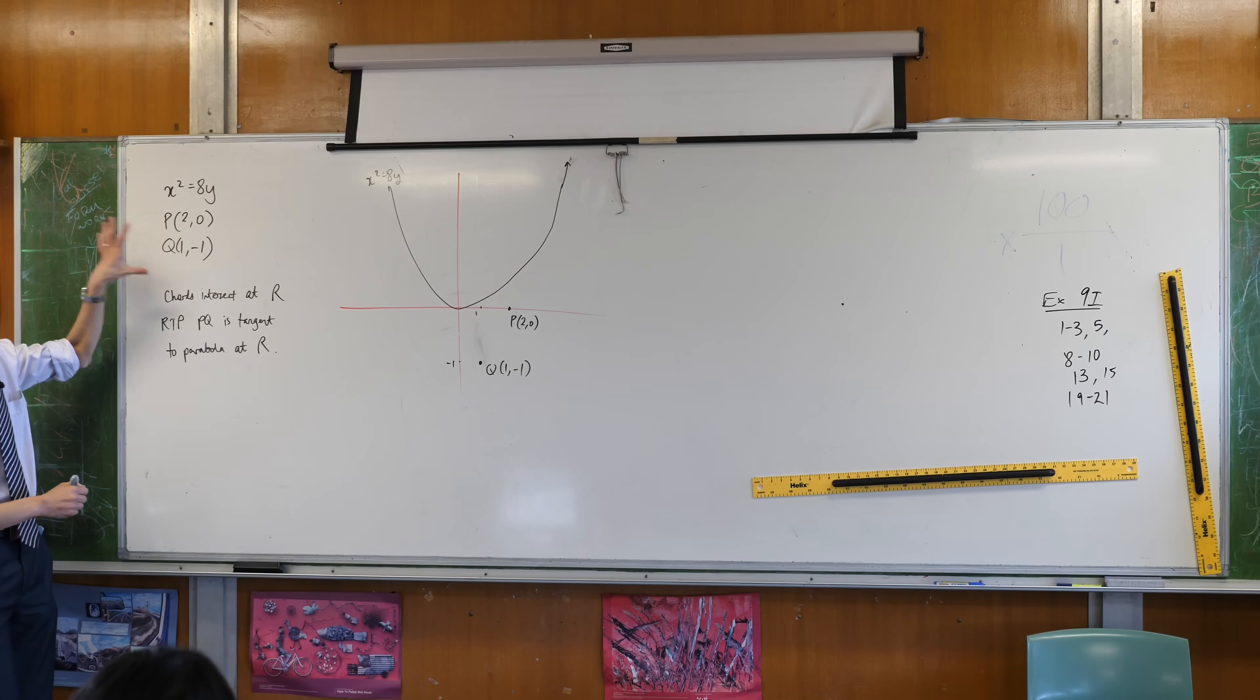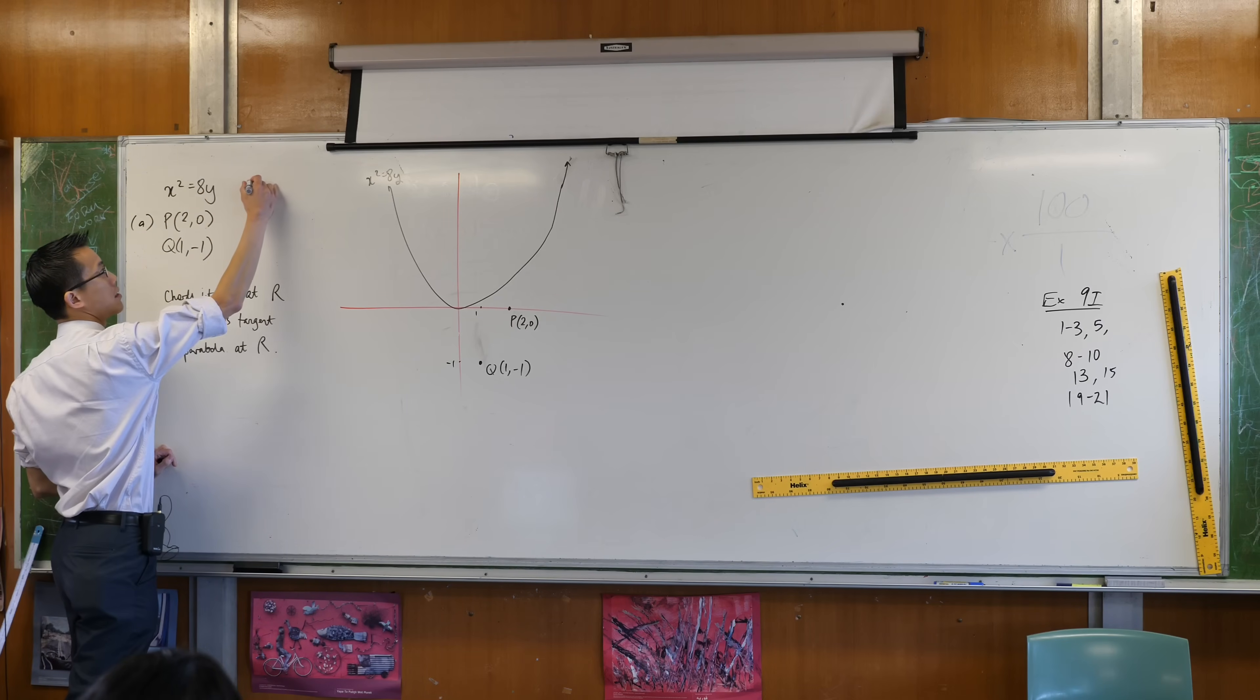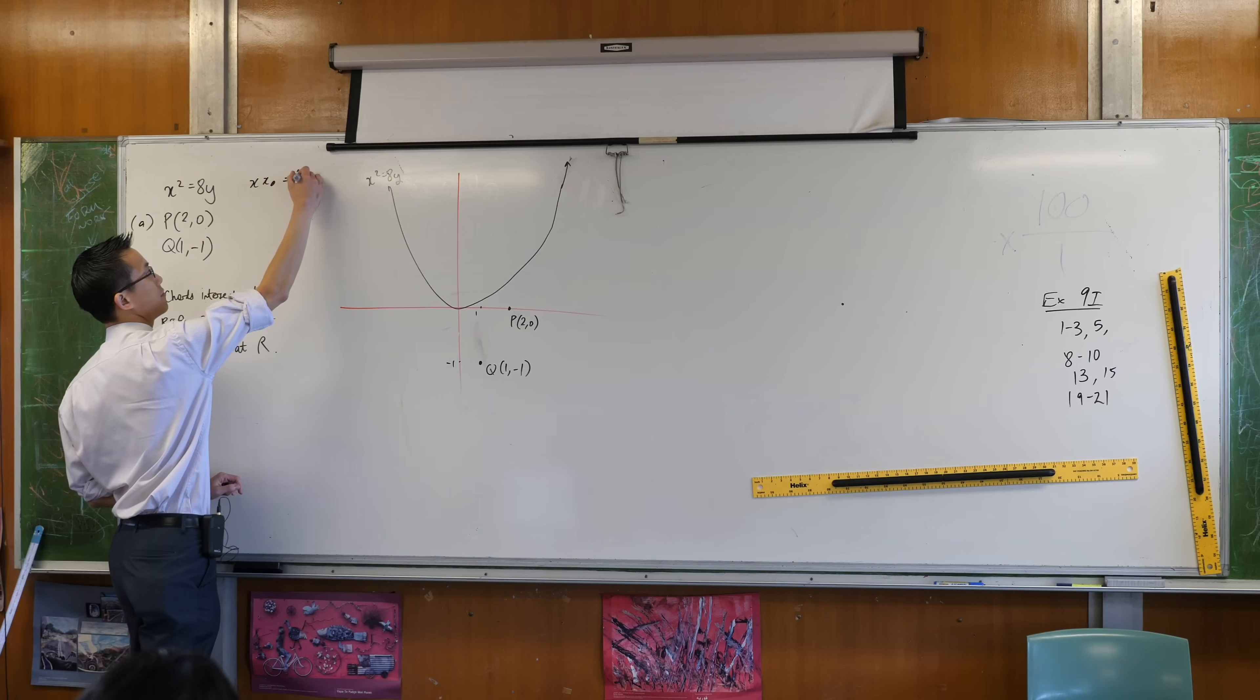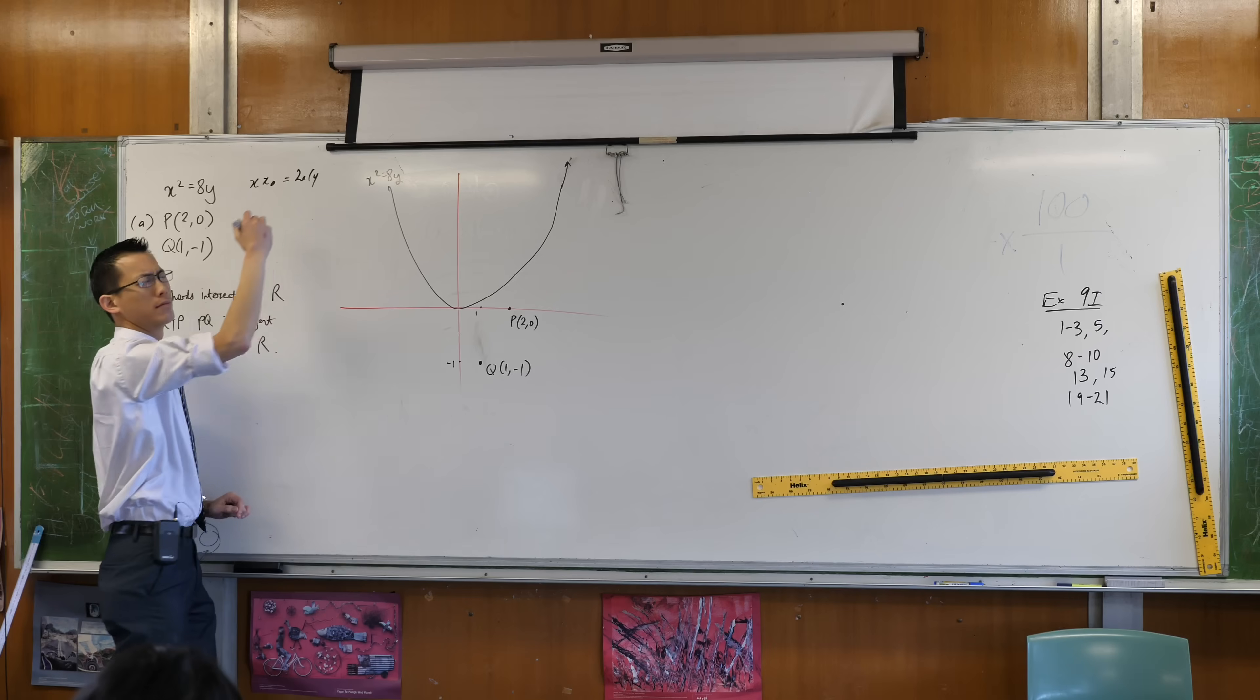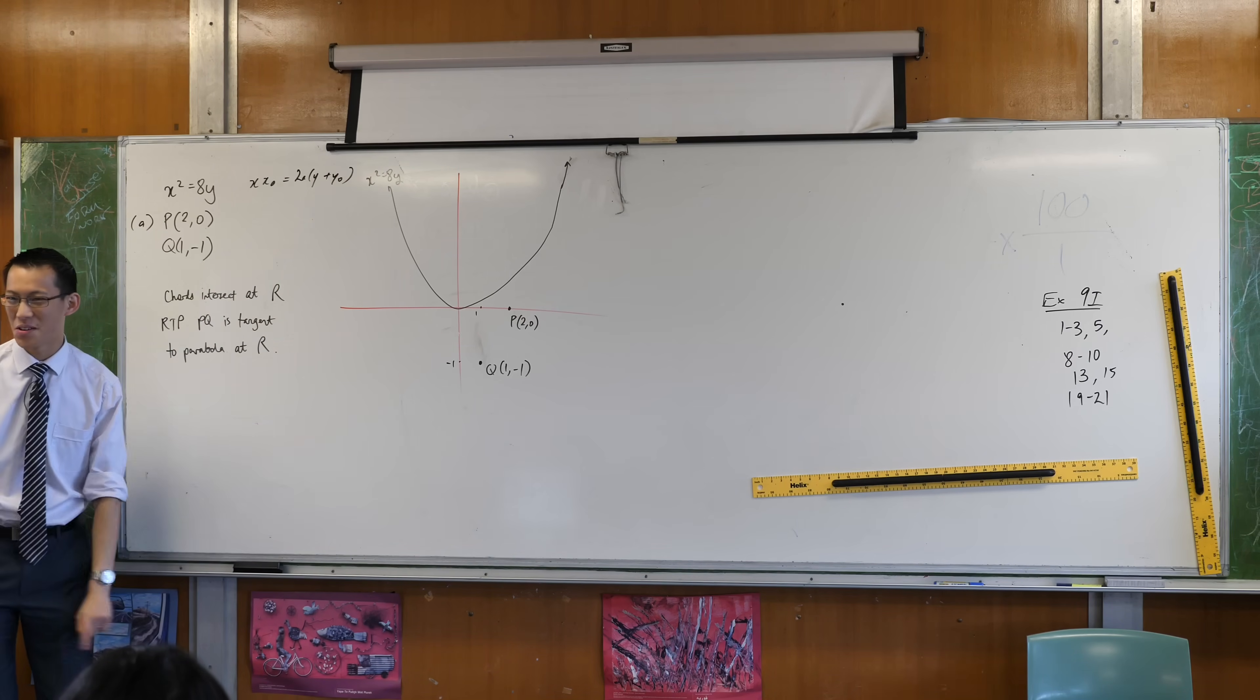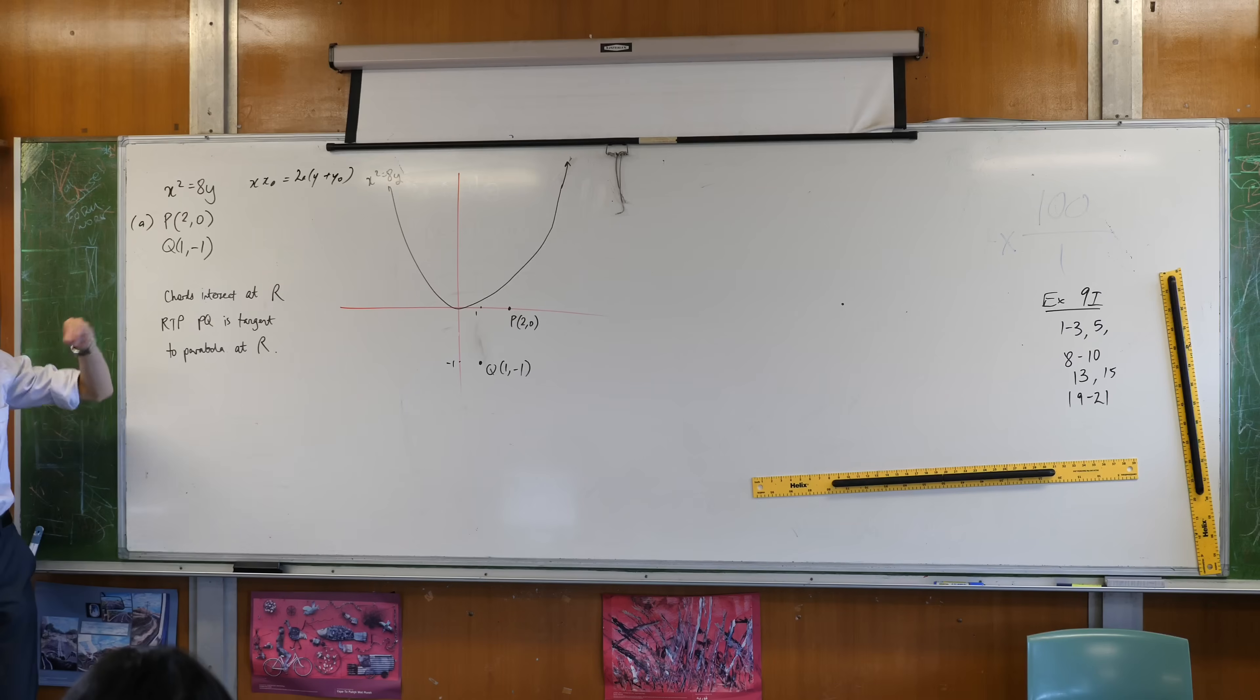So what they set up is, in part A, they say find the equations of the chords of contact from here and here on this parabola. The equation for the chord of contact is x·x₀ equals what? Do you remember? 2a·y plus y₀. Your x₀ and y₀ will come from these coordinates, that's that point that's off the parabola, and then A you have to work out.